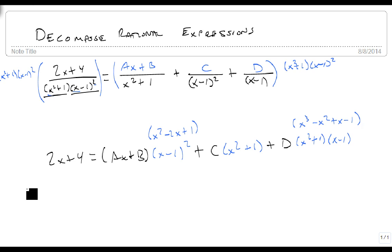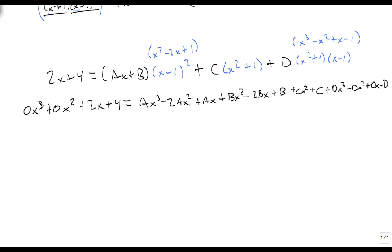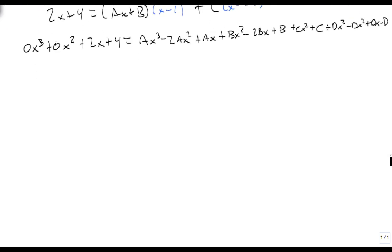Distribute. And we're going to get 0x cubed plus 0x squared plus 2x plus 4 equals ax cubed minus 2ax squared plus ax plus 2bx plus b plus cx squared plus c plus dx cubed minus dx squared plus dx minus d. Alright, there's our really long problem.